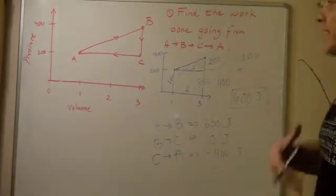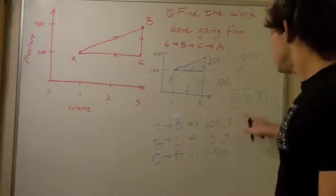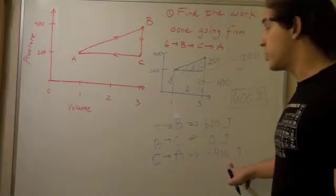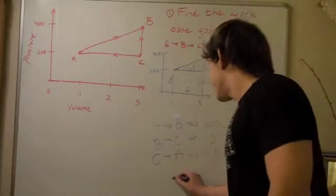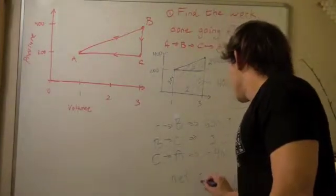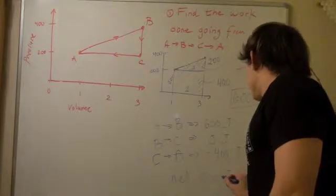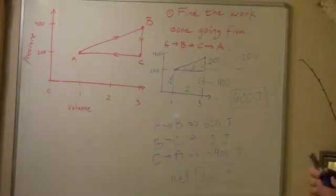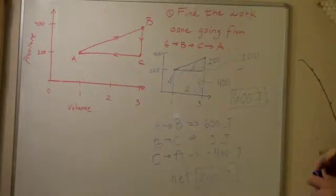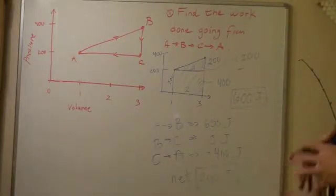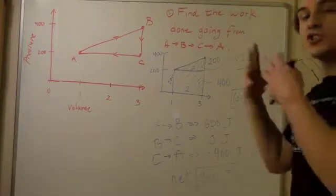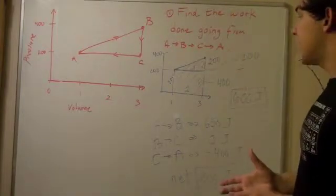And to find the sum, we simply sum these guys up. 600 plus 0 plus negative 400 gives you a total, or net, 200 joules. So, 200 joules, and it's positive, so that means the system does 200 joules of work on the surrounding.